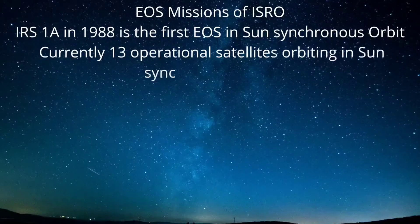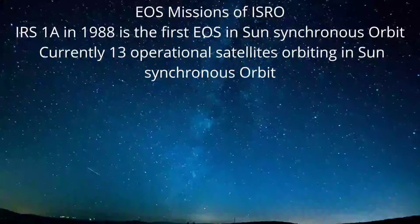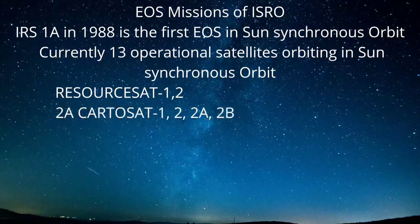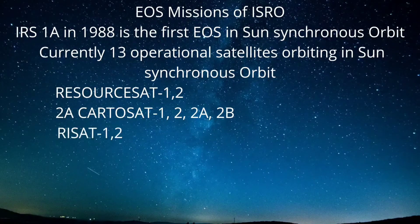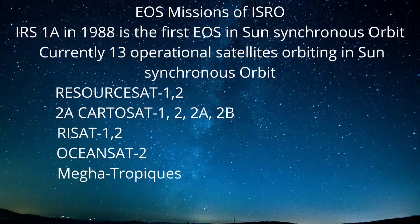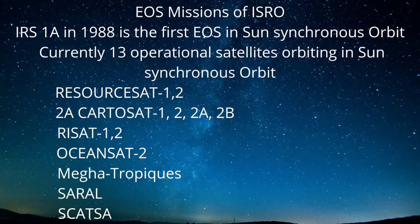Currently, 30 operational satellites are orbiting in Sun-Synchronous Orbit including RESOURCESAT-1, RESOURCESAT-2, CARTOSAT-1, CARTOSAT-2, CARTOSAT-2A, CARTOSAT-2B, RISAT-1, RISAT-2, OCEANSAT-2, MEGHATROPIQUES, and SARAL.